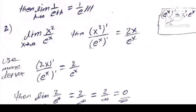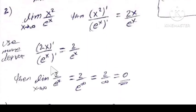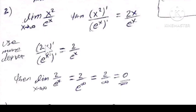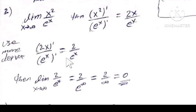Because the derivative of eˣ means the derivative of the exponent part times eˣ itself. The first limit gives infinity over infinity, so in this case we use a second derivative. Therefore the second derivative: the derivative of 2x is 2, and the derivative of eˣ is eˣ. So we get 2 over eˣ.